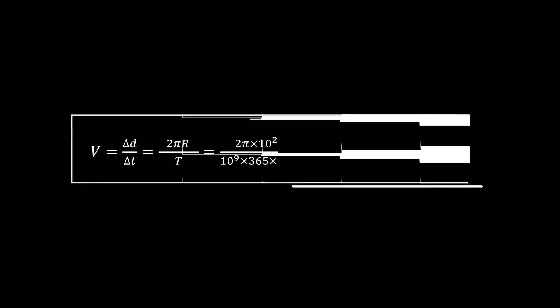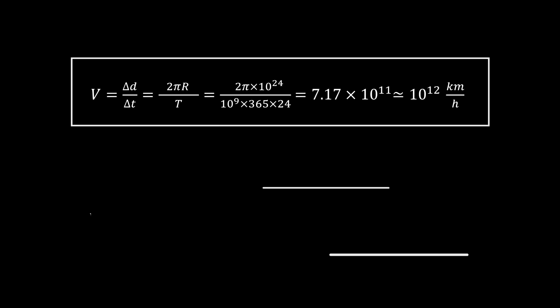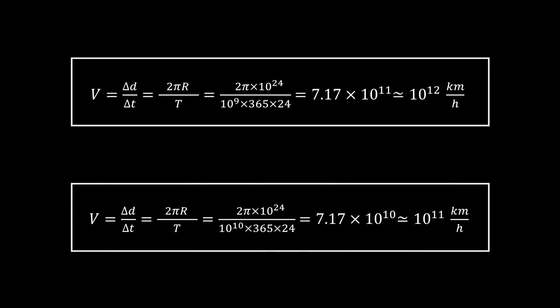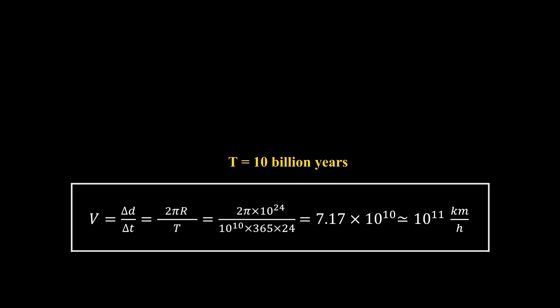By a simple calculation, we can see that the speed at the edges of the universe is approximately between 10 to the power of 11 or 12 kilometers per hour. That is 100 or 1000 times greater than the light speed, which is about 10 to the power of 9 kilometers per hour in vacuum.